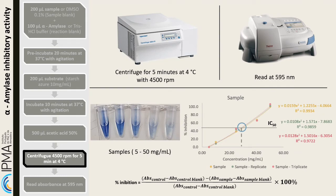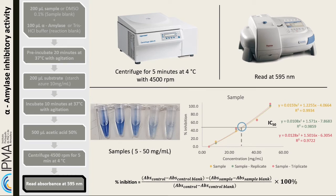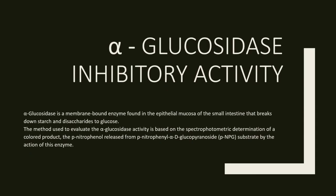The inhibition percentage is given by the equation shown in the slide. Alpha-glucosidase is a membrane-bound enzyme found in the epithelial mucosa of the small intestine that breaks down starch and disaccharides to glucose. The method used to evaluate alpha-glucosidase activity is based on the spectrophotometric determination of a colored product — paranitrophenol — released from paranitrophenol alpha-D-glucopyranoside substrate by the action of this enzyme.